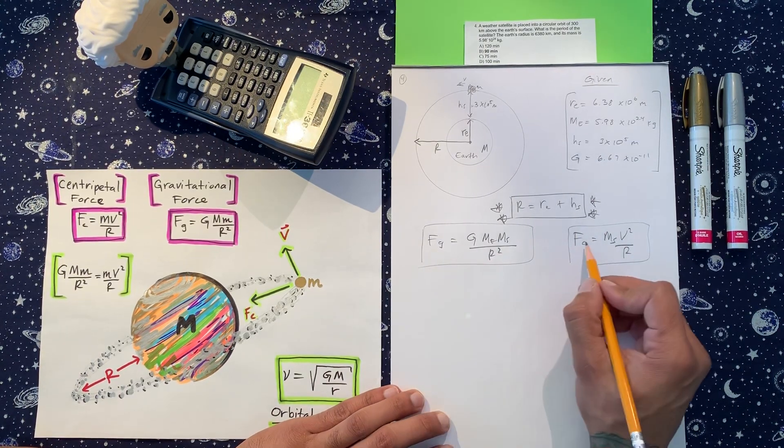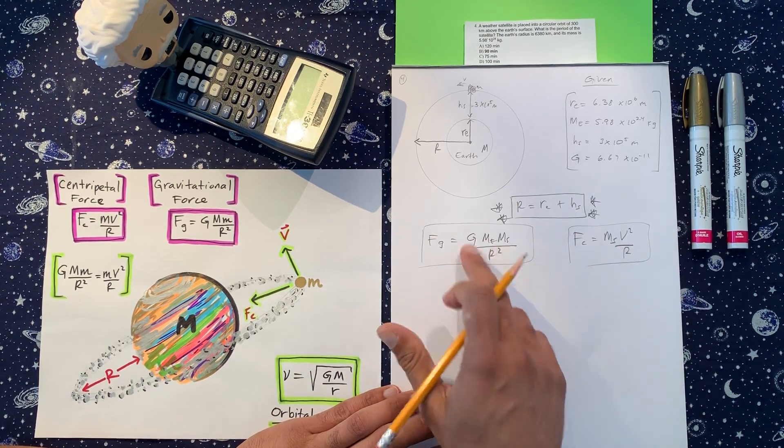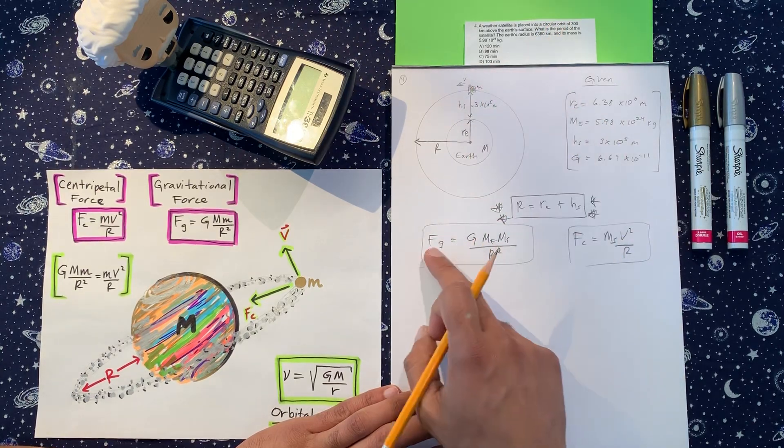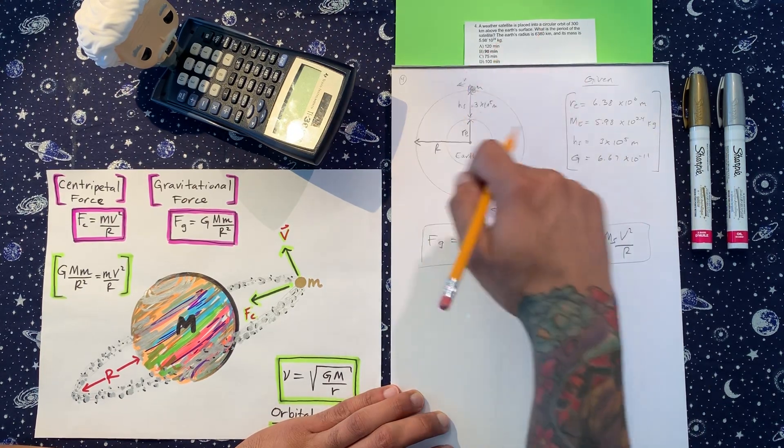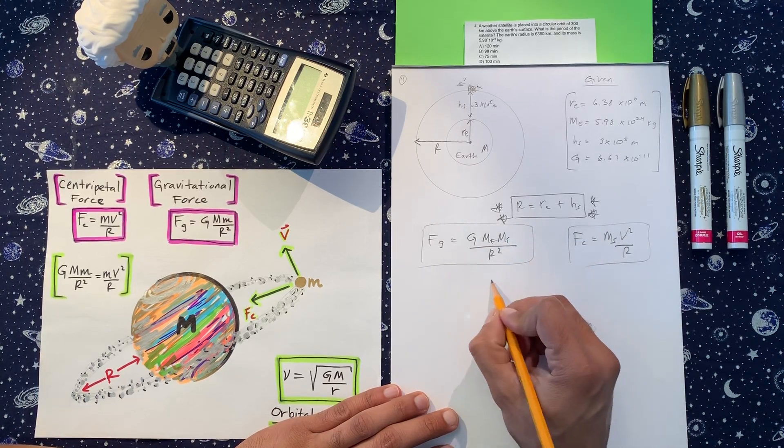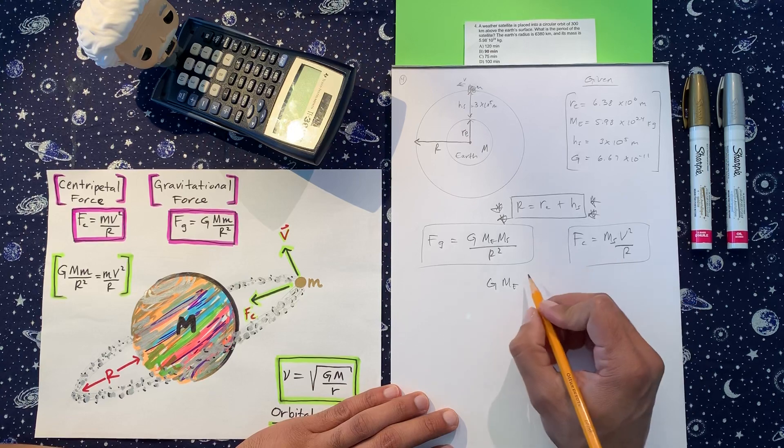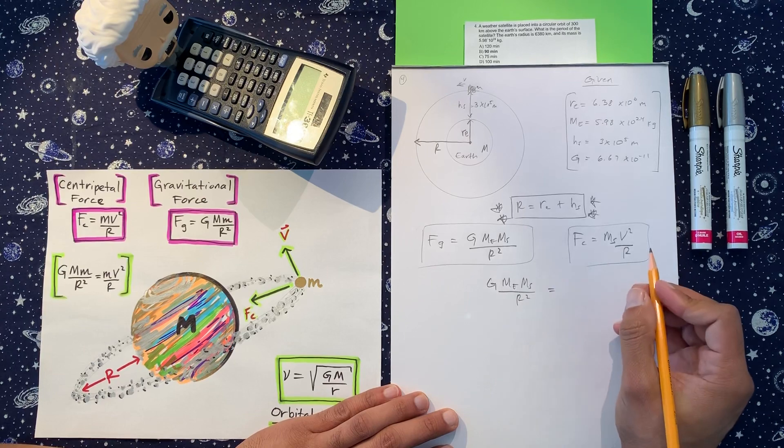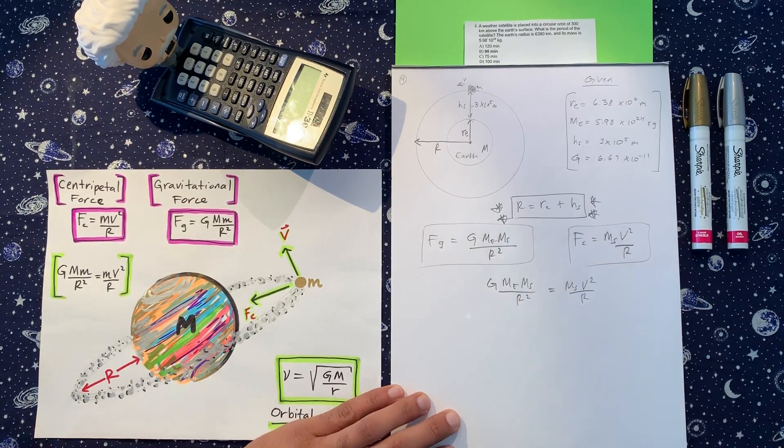All right, so because these two forces are going on at the same time, here we got two bodies gravitationally bound, and here we got the force centripetal of this body on the outside. And so because of that, we set them equal to each other. So we got here G M_E, mass of the Earth, mass of the satellite over r squared is equal to mass of the satellite, velocity squared over r.